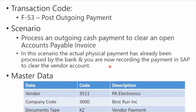For master data we'll use our PA Electronics vendor 3511, company code 3000. You'll notice that the default document type will be KZ for vendor payment, and this is our bank account that we're going to use to have our credit for cash going out. Let's see what that looks like in the system.